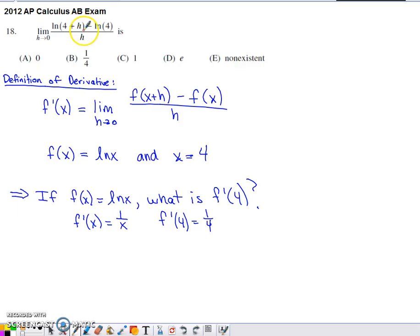So if you look at the expression inside of the limit in problem 18 here, we have natural log of 4 plus h minus natural log of 4. So we've taken the function natural log of x, we've evaluated at 4 plus h, we've evaluated at 4, and taken a difference.